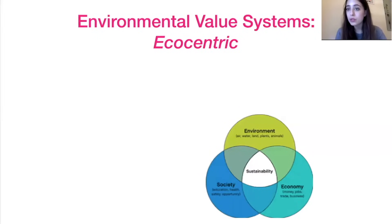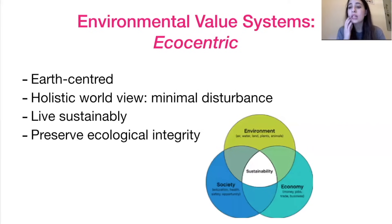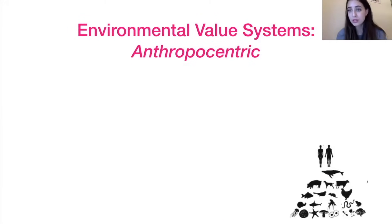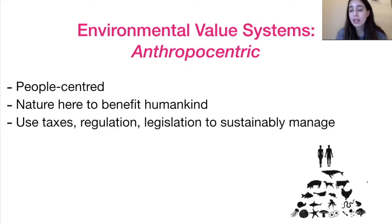That brings us to environmental value systems. An environmental value system describes your evaluation or your outlook on the environment as a whole. We can split that into ecocentric, anthropocentric, and technocentric viewpoints. Ecocentric describes an outlook where the earth is really at the core of your values — these people want a holistic worldview and for people to live sustainably in a way that minimizes impact on the environment and preserves its ecological integrity. In contrast, the anthropocentric environmental value system really puts people as their number one priority. They see resources as here to be exploited by humans but think focus should be on sustainably using them, with humans at the center.